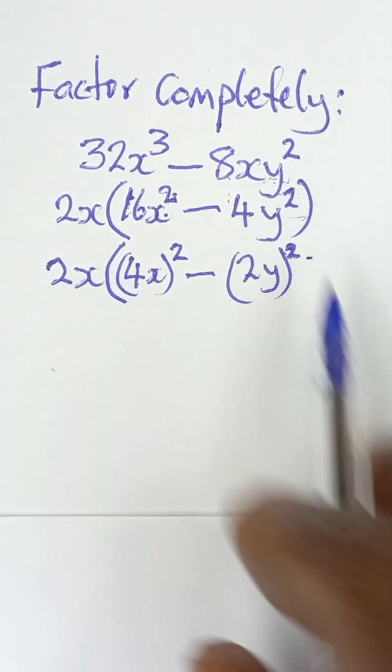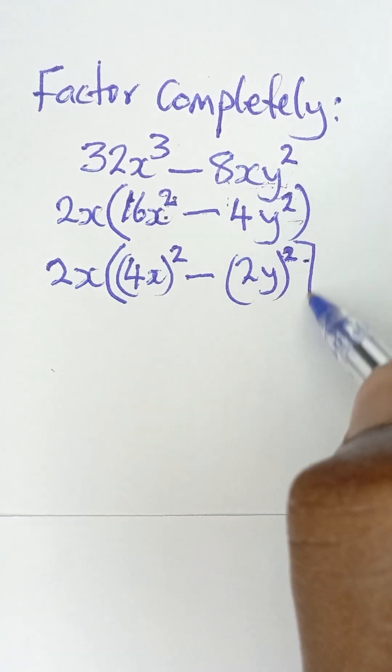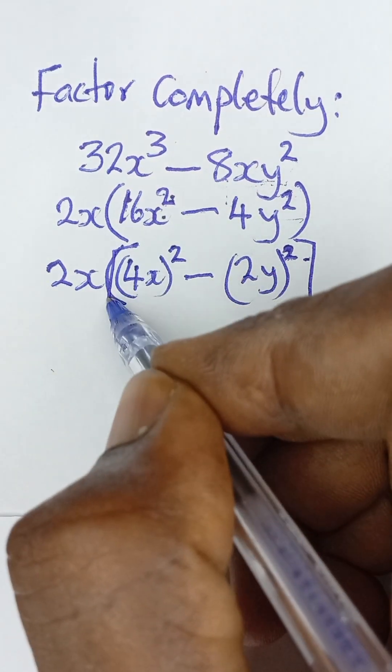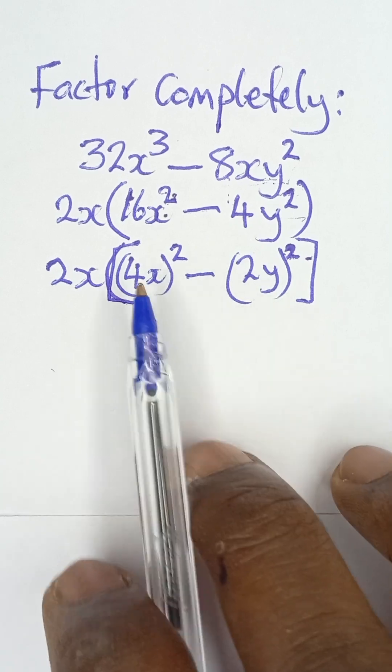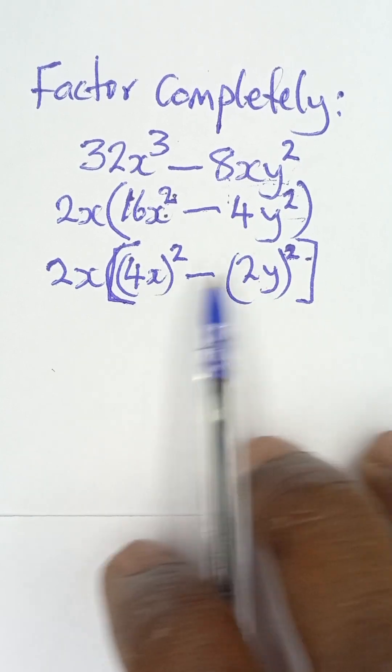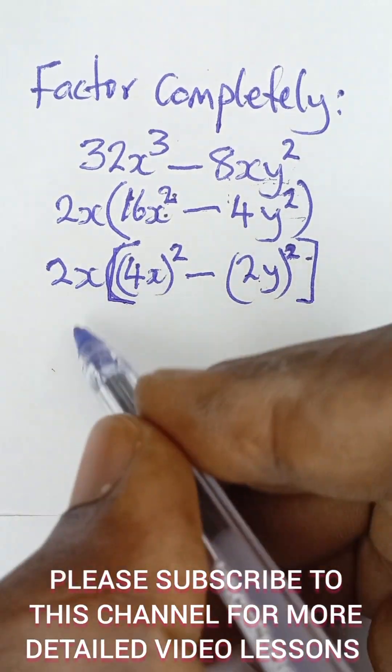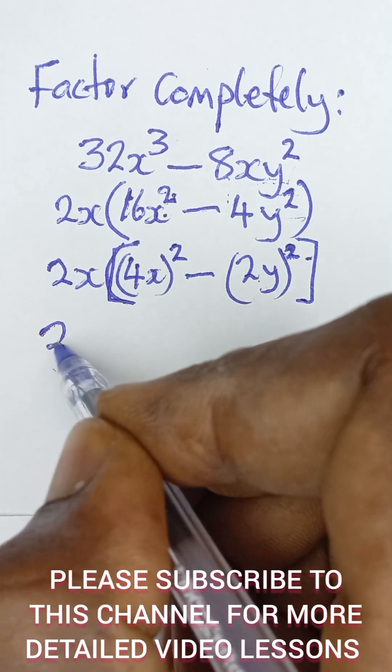So that when you square this it takes you back to this original form. Now the next thing to do is to remember the rule of difference of two squares. So when you have difference of two squares like this, what you simply do is to open up brackets, add the two terms.